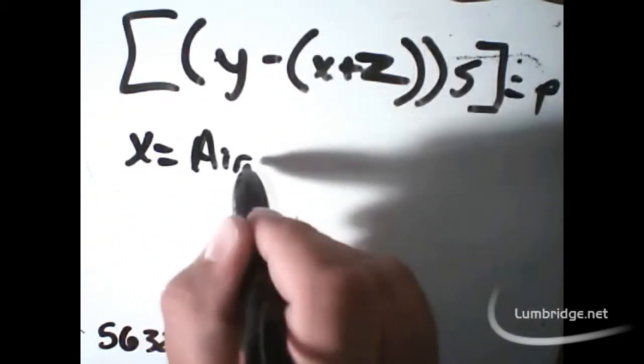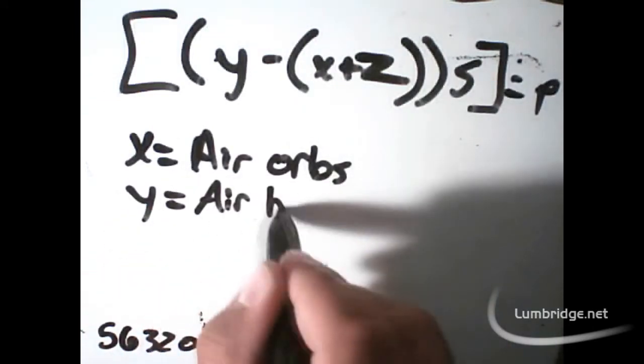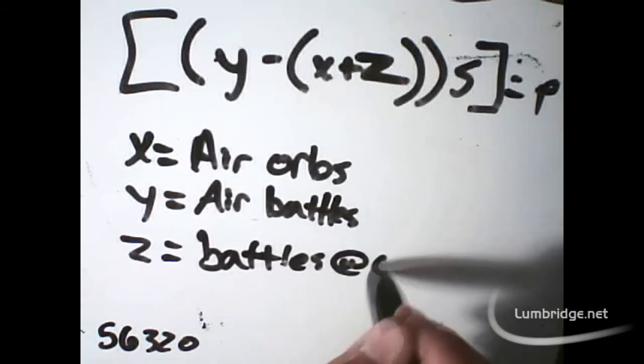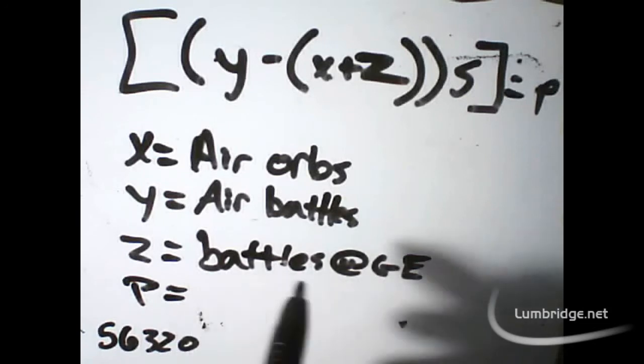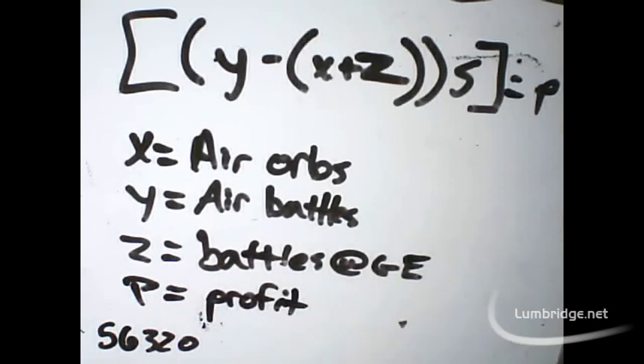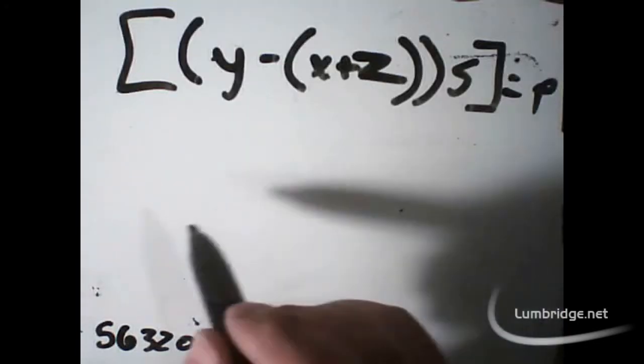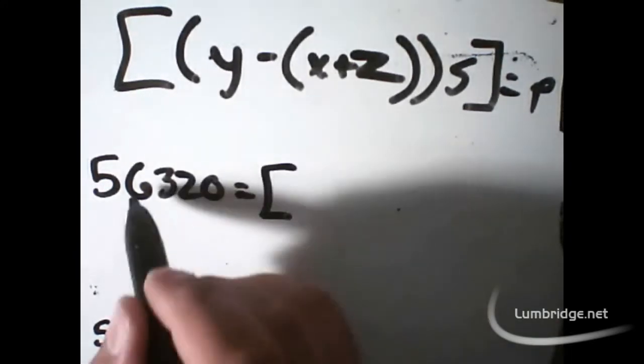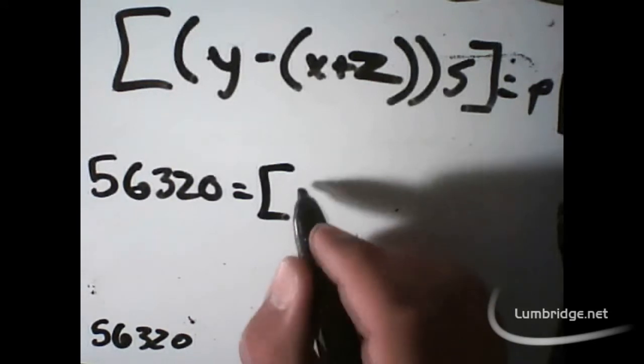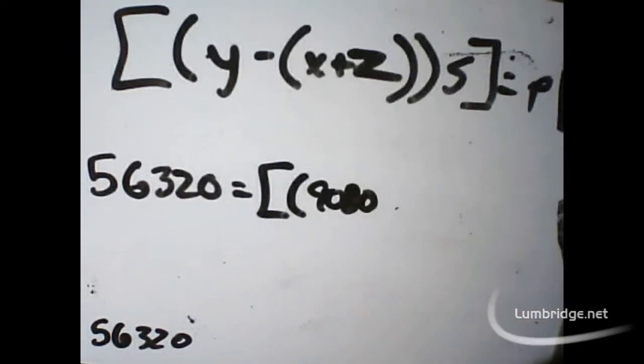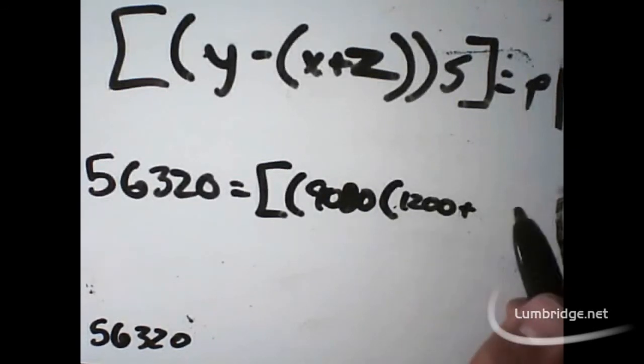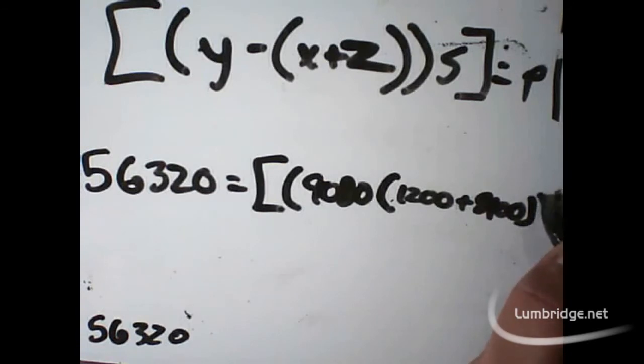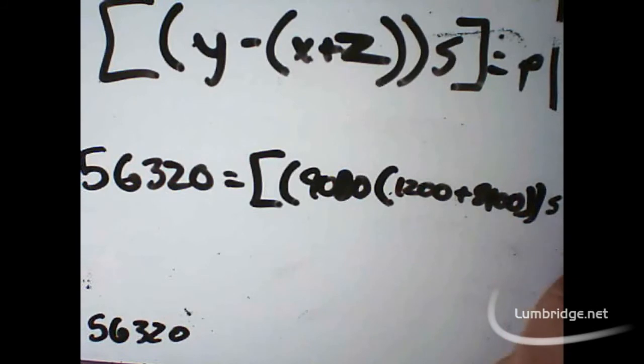Again, X is air orbs, the price of air orbs. Y is the price of air battle staffs. Z is going to be the price of battle staffs on the grand exchange. And then P was our previous unknown. But this is going to stand for profit. And then S is our unknown. We know what P is. It's 56,320 from our previous equation. We know what Y is, which is 9,080 from our previous equation. X was 1,200. And for the purpose of this equation, we're going to say that Z is 8,100. We're running out of room. Close the brackets. Add S and the absolute value.